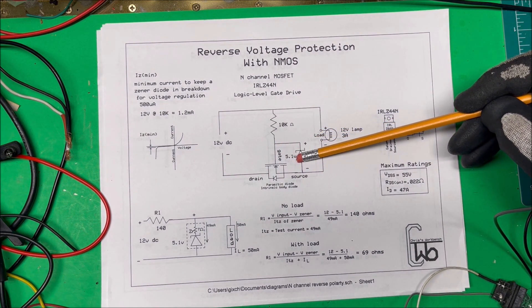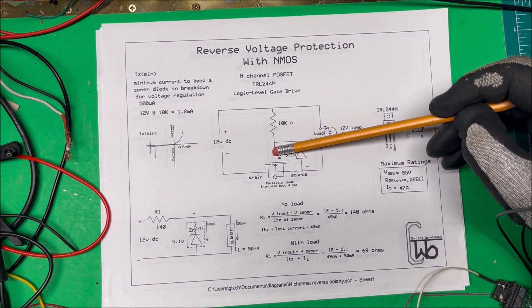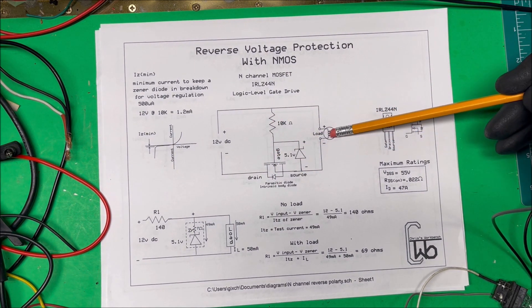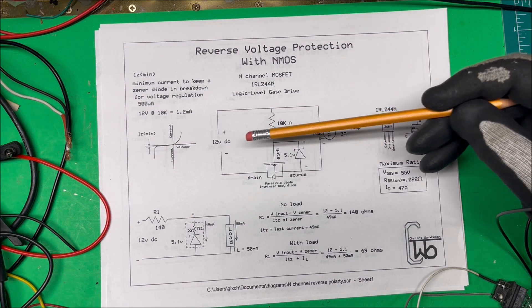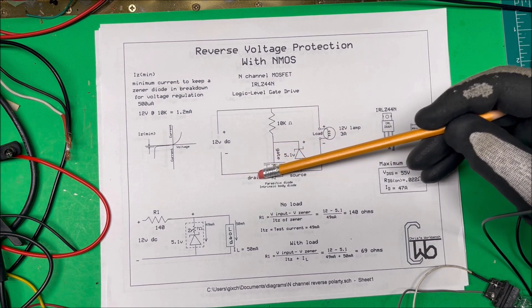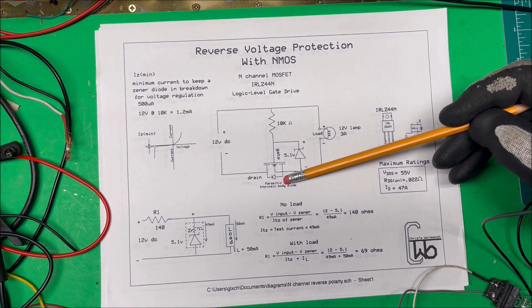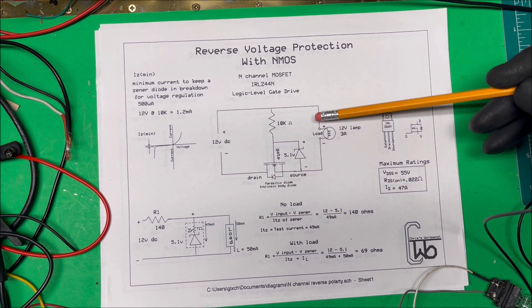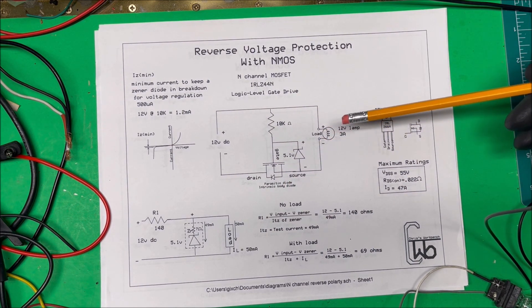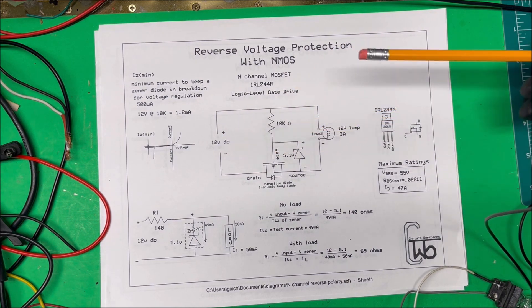So we drop our 5 volts across the Zener here we get 5.1 volts on the gate that turns on and turns our load on. So now if we reverse the direction here, positive is going to come down here, it can't get through this diode, the diode is going to block it and no current is going to run through this diode, the load will stay off. So it's only going to work when the positive is up here and negative down here.